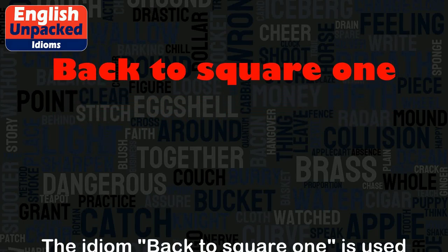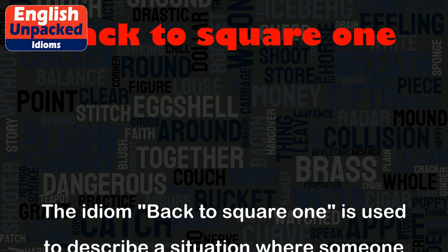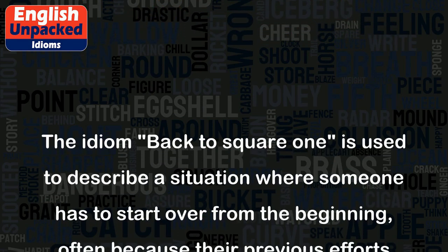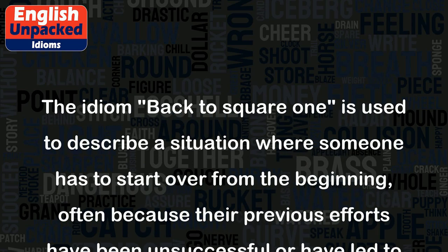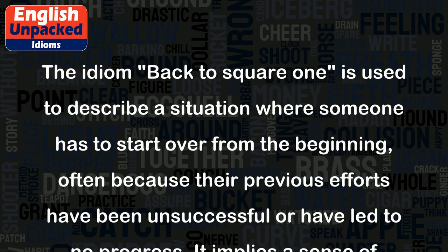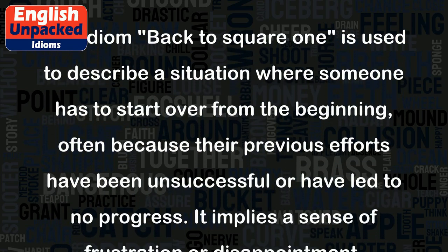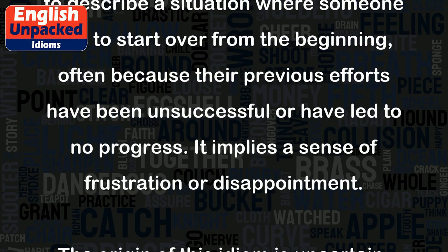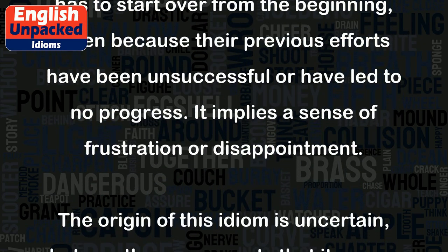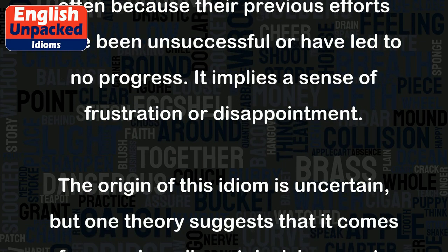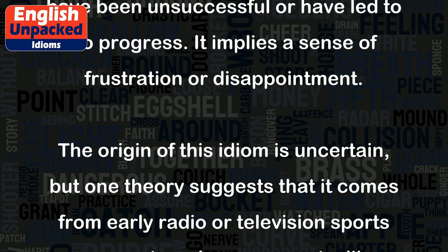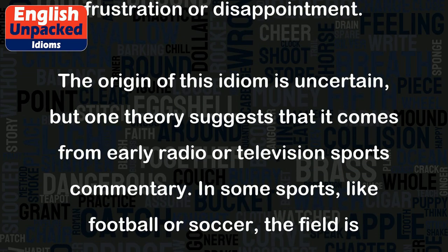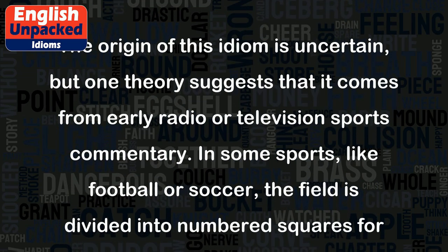Back to Square One. The idiom 'back to square one' is used to describe a situation where someone has to start over from the beginning, often because their previous efforts have been unsuccessful or have led to no progress. It implies a sense of frustration or disappointment. The origin of this idiom is uncertain, but one theory suggests that it comes from early radio or television sports commentary.